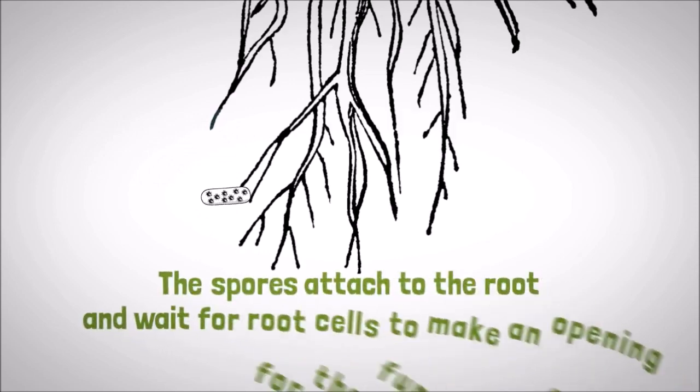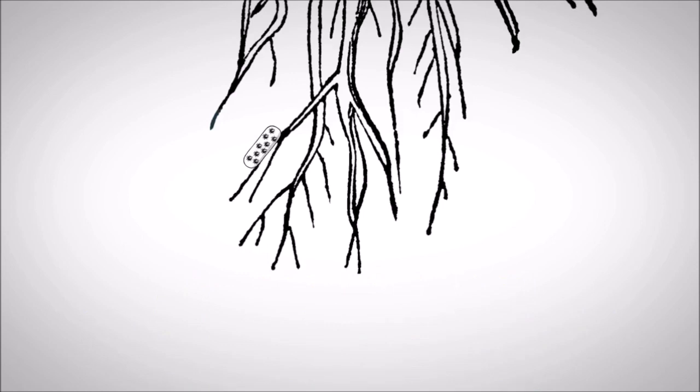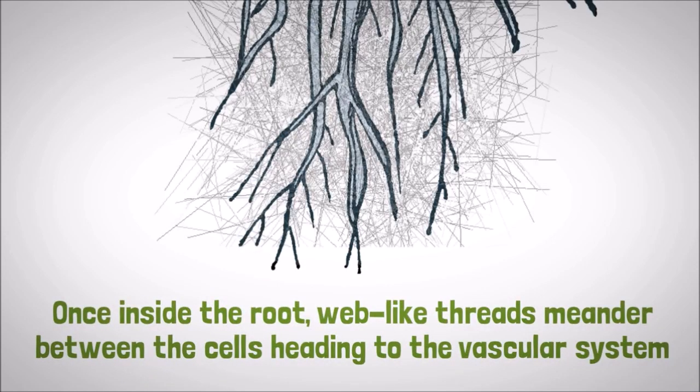The spores respond by attaching to the root and wait for root cells to make an opening for the fungus to enter. Once inside the root, web-like threads meander between the cells, heading to the vascular system.